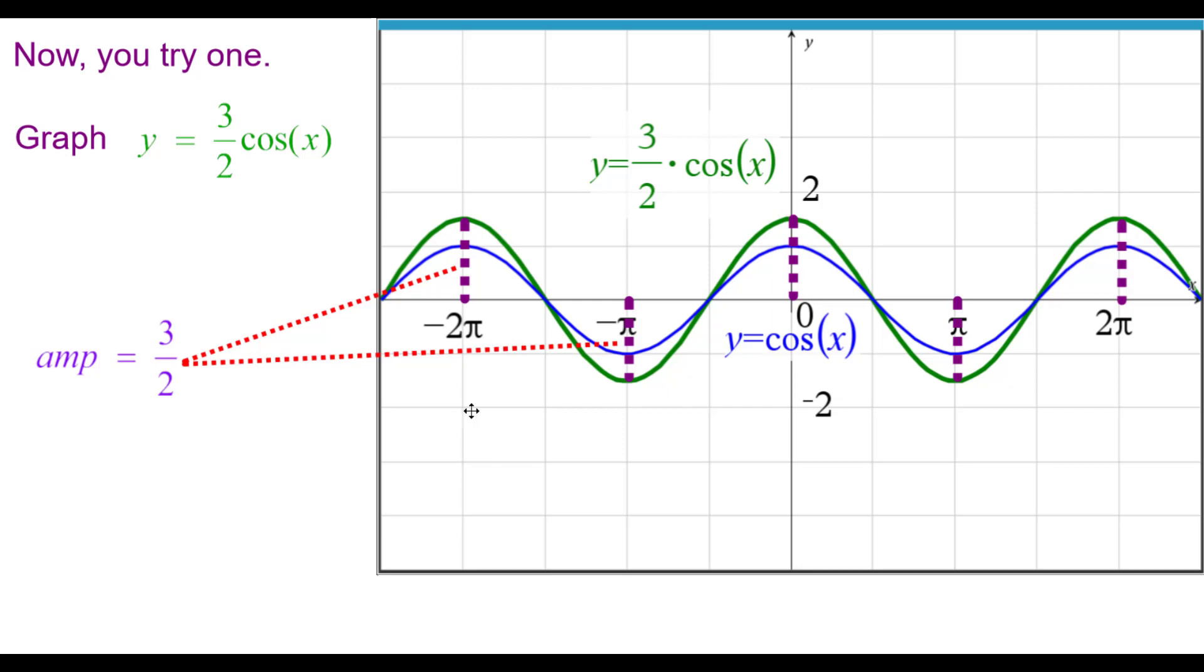And here's the answer in green. And you can see that the amplitude is positive 3 halves or 1 and 1 half. If you go from the line containing the points of inflection up to a maximum, it's up 1 and 1 half or down 1 and 1 half.